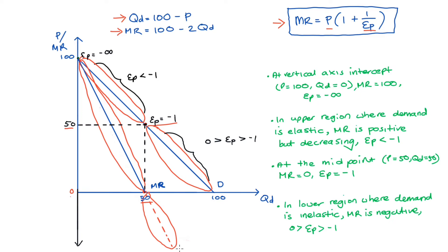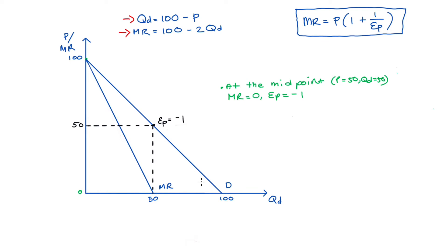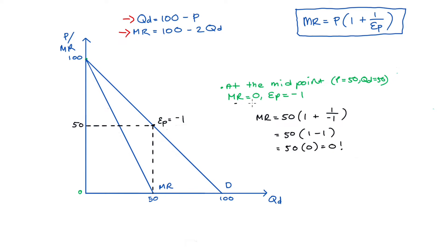I'm now going to demonstrate these four points using our formula so you can get a feel for how it works. Let's start with the midpoint, since it's the easiest. At this point, quantity is 50, price is 50, and elasticity is negative 1, so marginal revenue should equal zero. Applying our formula: marginal revenue equals 50 multiplied by 1 plus 1 divided by negative 1, which simplifies to 50 times (1 minus 1), which is 50 times 0, which equals zero. That's exactly what we expected — at the midpoint, marginal revenue is zero.